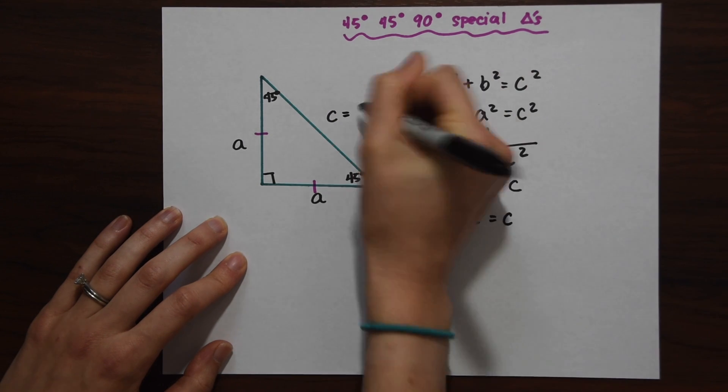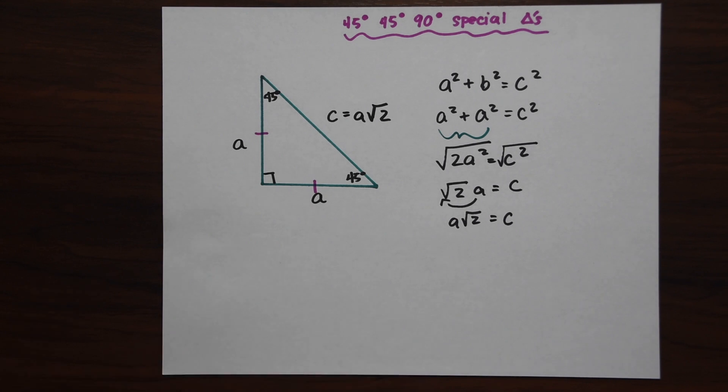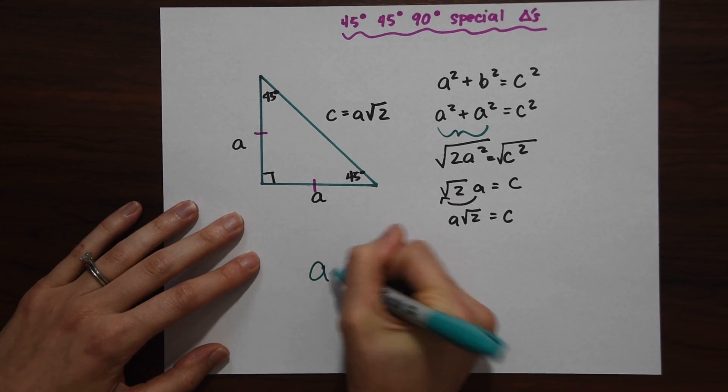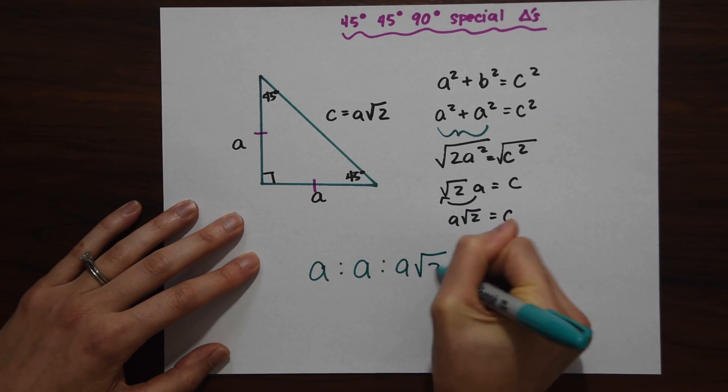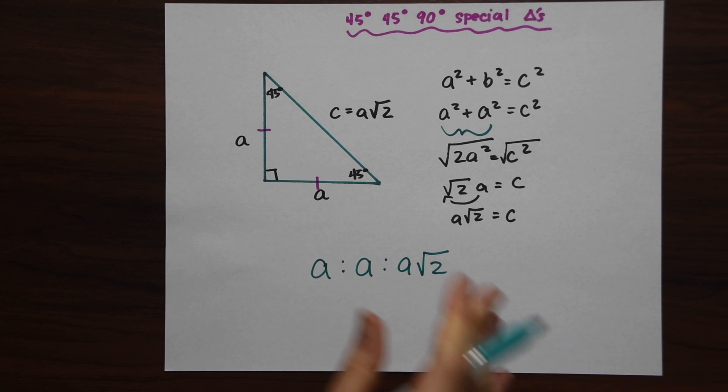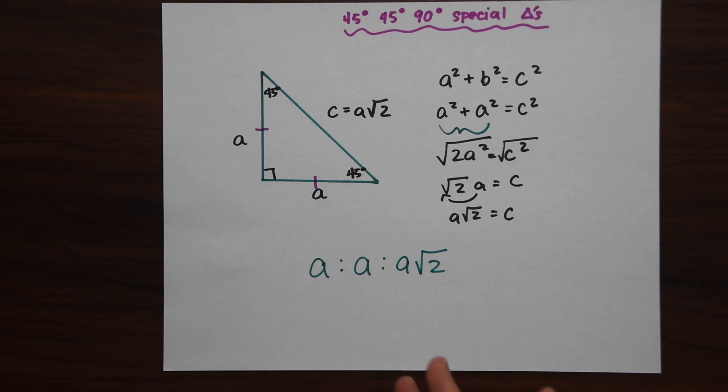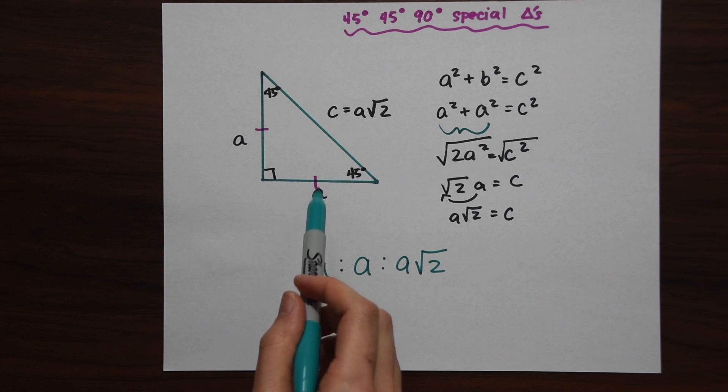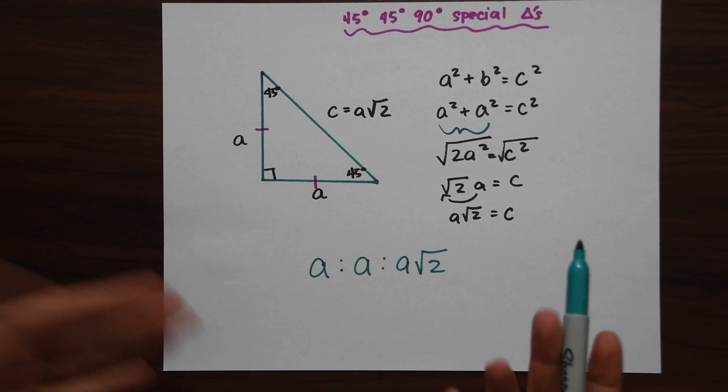This ends up creating a ratio for all 45-45-90 degree special triangles where the ratio is a to a to a radical 2. Anytime you see a 45-45-90 degree special triangle, the side lengths always have this ratio. That's why they're special. If you're given one value of the leg or the value of the hypotenuse, you can always find the two other sides.